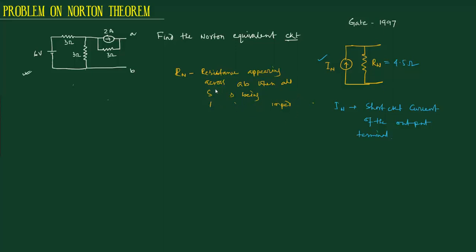Let's short circuit the output terminal. The circuit has 6 volts, 3 ohm, 3 ohm, 2 ampere current source, and 3 ohm. We short circuit the AB terminal.